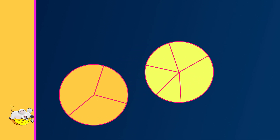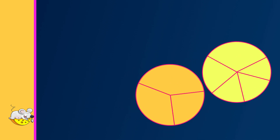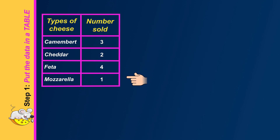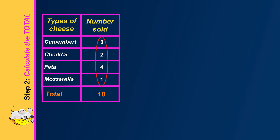The first example is about the number of different types of cheese sold in a shop. Step one is to display the data in a table like this. This shop sold three camembert, two cheddar, four feta, and one mozzarella cheese. Step two is to add these to get the total number of cheeses sold — three plus two plus four plus one adds to a total of ten.